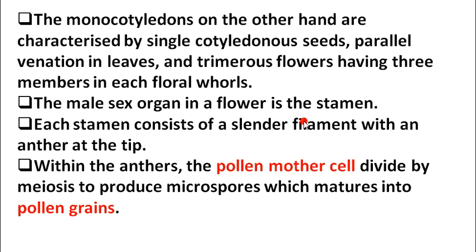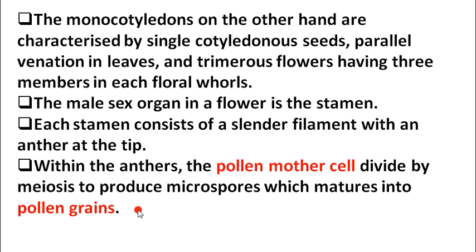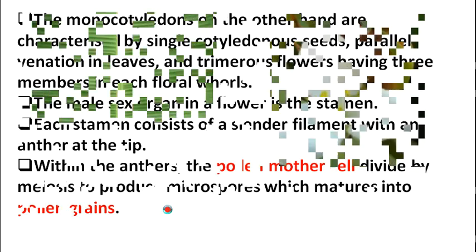The male sex organ in a flower is called the stamen. Each stamen consists of a slender filament with an anther at the tip. Within the anthers, the pollen mother cell divides by meiosis to produce microspores, which mature into pollen grains. The filament gives support and the anther contains pollen grains, which are the male gametes that will fertilize the female gamete.